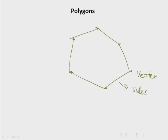This polygon has six sides and six vertices. Polygons are classified by their sides and vertices. A three-sided polygon is called a triangle, any four-sided polygon is called a quadrilateral, a five-sided polygon is called a pentagon, a six-sided polygon is called a hexagon, an eight-sided polygon is called an octagon, and a ten-sided polygon is called a decagon, and so on.